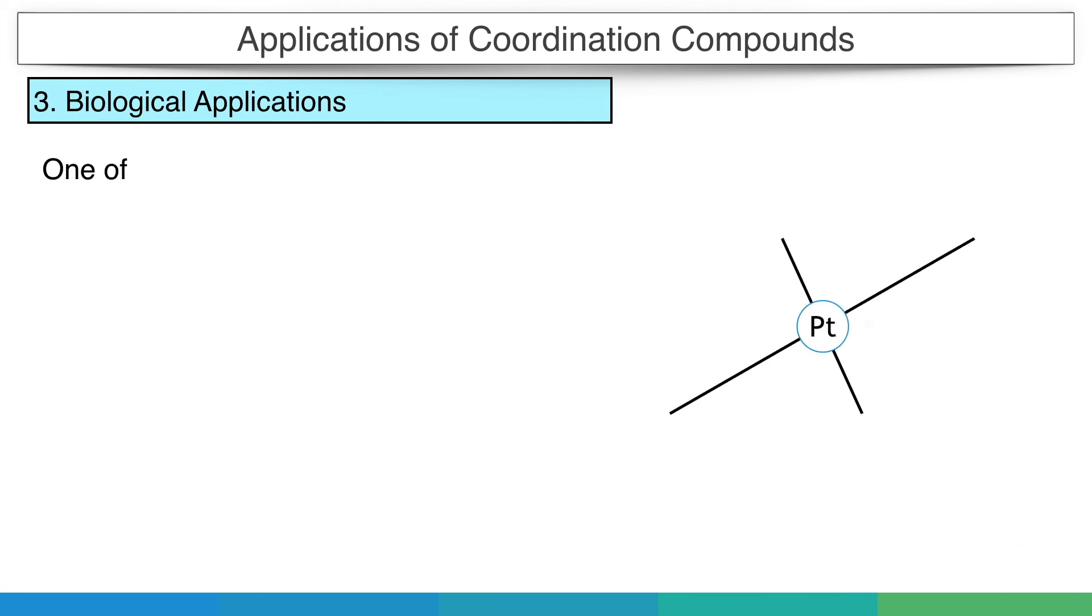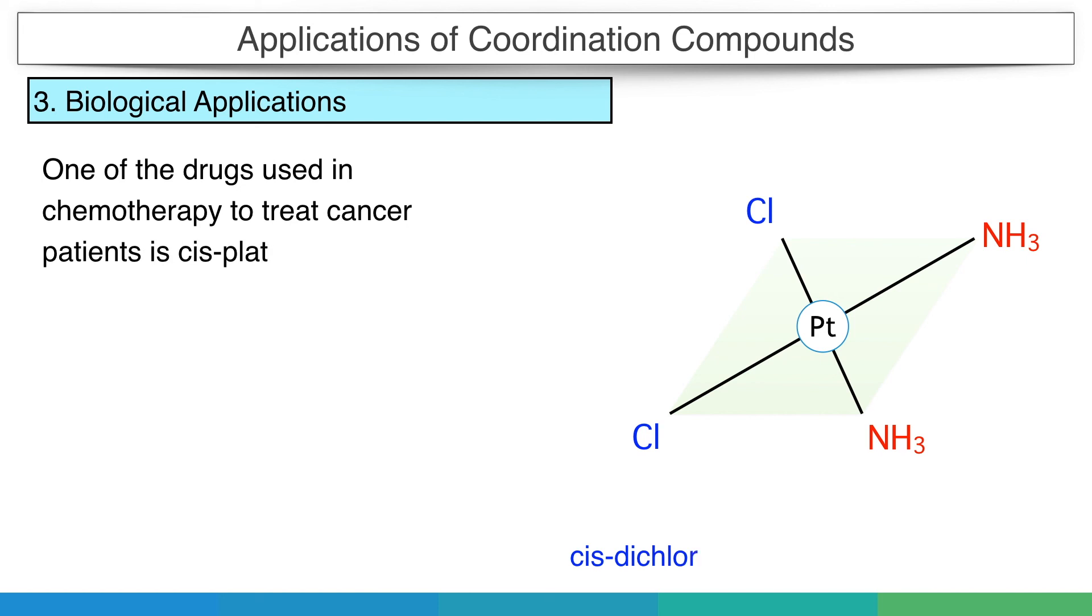One of the drugs used in chemotherapy to treat cancer patients is cisplatin or cis-dichlorodiamine platinum.